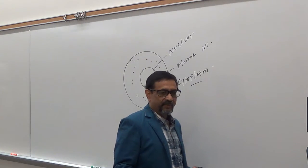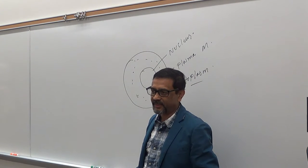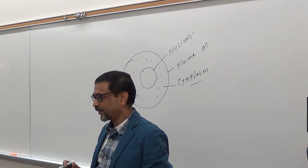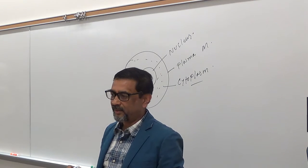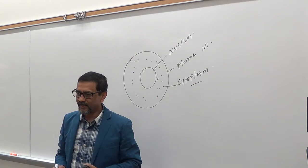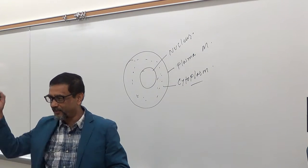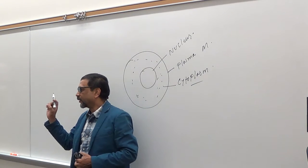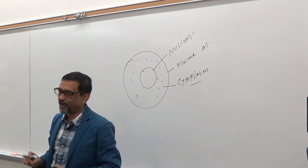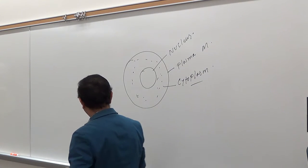The cell membrane gives the boundary of the cell. It gives the shape of the cell and separates the inside from the outside. Inside the cell is separated from outside by the cell membrane or plasma membrane — that separation is very important.